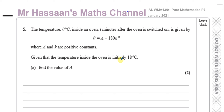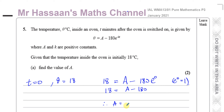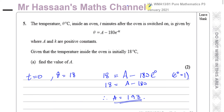If the temperature of the oven is initially 18 degrees Celsius, that means when T equals 0, theta equals 18. We replace theta with 18 and T with 0, so we have 18 equals A minus 180 times E to the power of minus K times 0. Since E to the power of 0 is 1, we get 18 equals A minus 180. Therefore A equals 180 plus 18, which is 198. That's the value of A and part A is done.